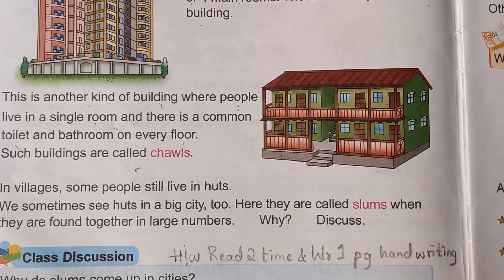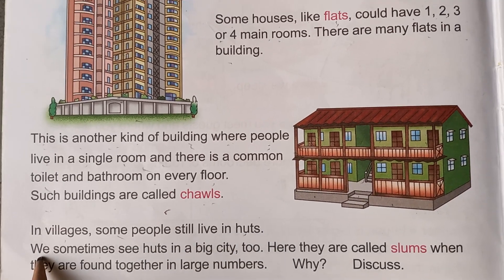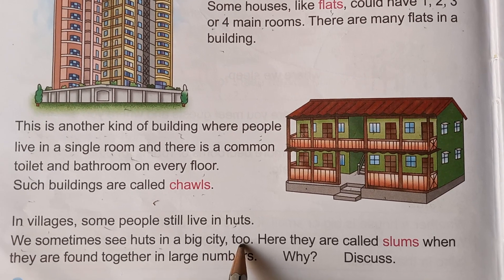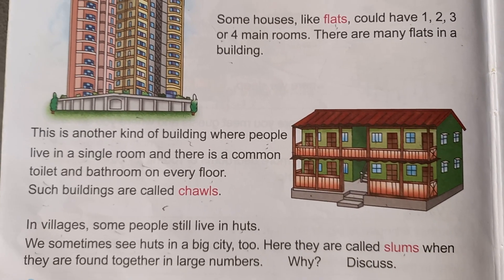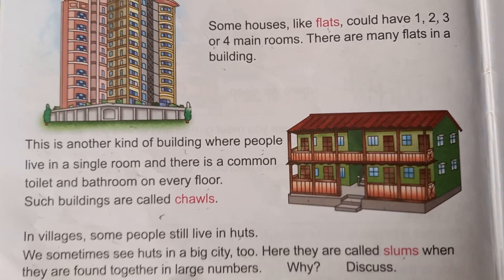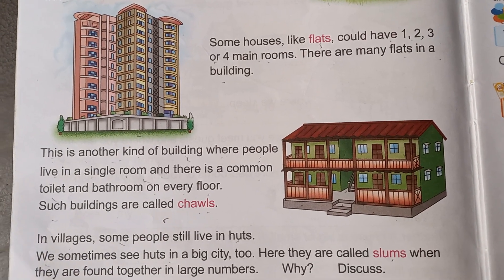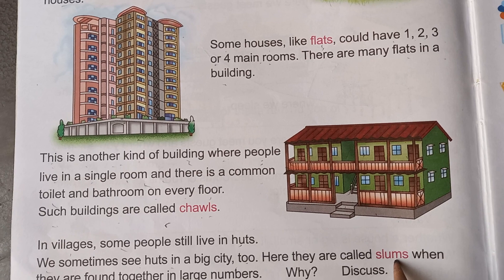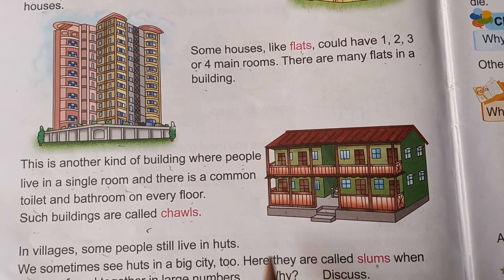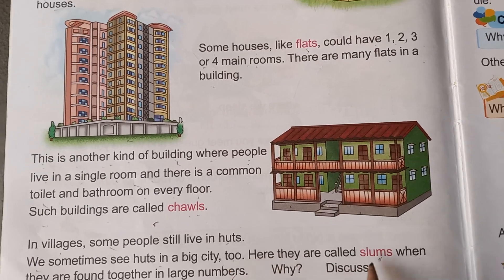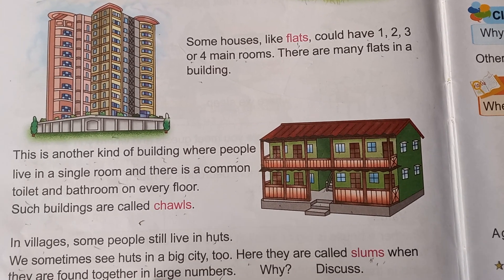In villages some people still live in huts. We sometimes see small huts in big cities also. Here they are called slums. Why do we call them slums? Because they are poor people who can't afford a chawl, an apartment, a cottage or a bungalow. So they live in one room only. When poor people are found together in large numbers with small houses connected to each other, we call that a slum area.